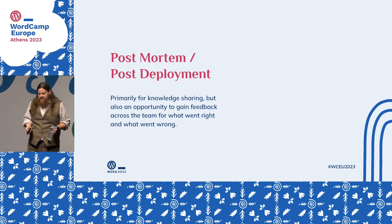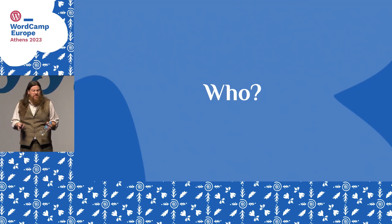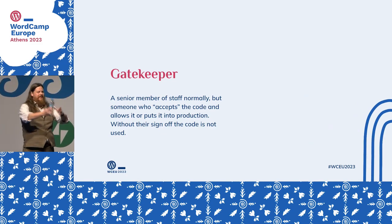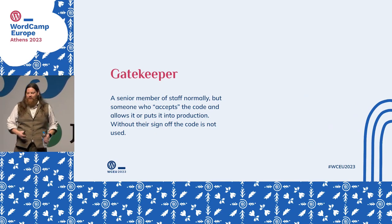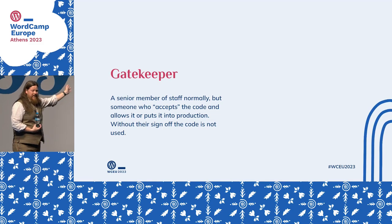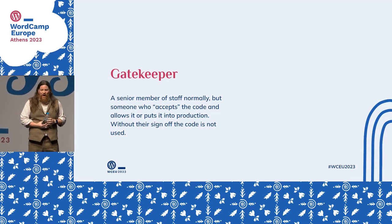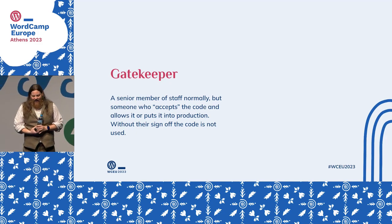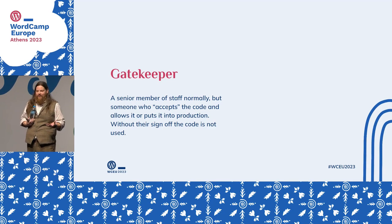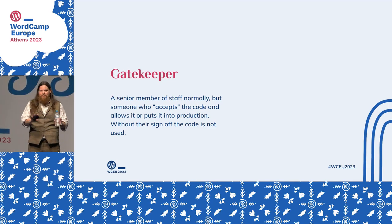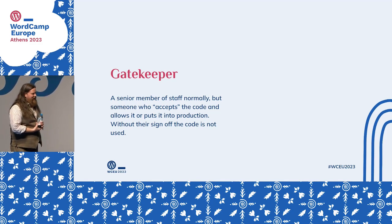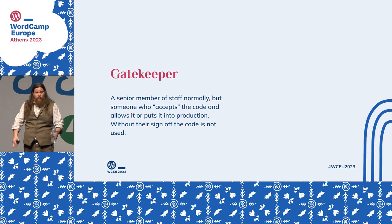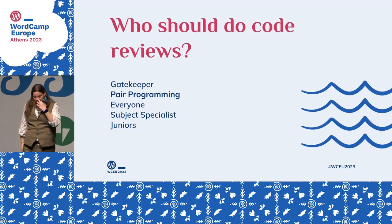Now, who should do a code review? First, you have the Gatekeeper — the senior member of staff who says I am very important and I push the button. I deliberately use the term gatekeeping because you immediately go, I don't like that person. But that's how most of our institutional setup is. If you've got lots of money on the line and your business runs on this, it's not necessarily a bad thing — but without their sign-off, code is not going into production.